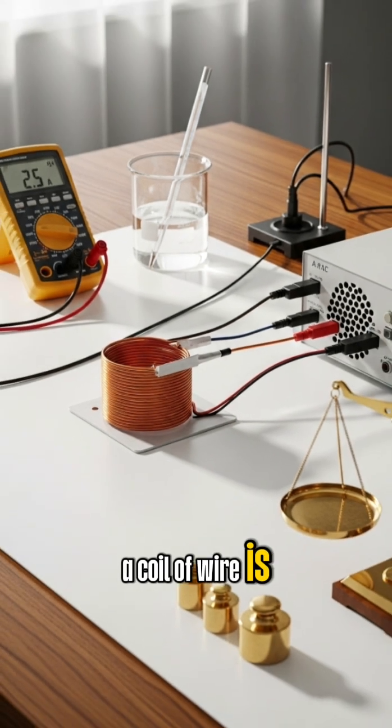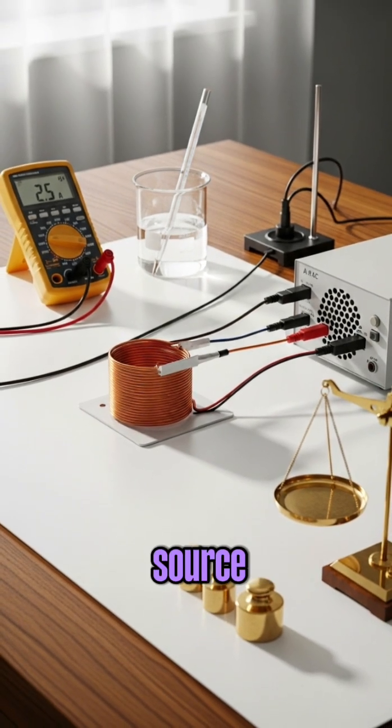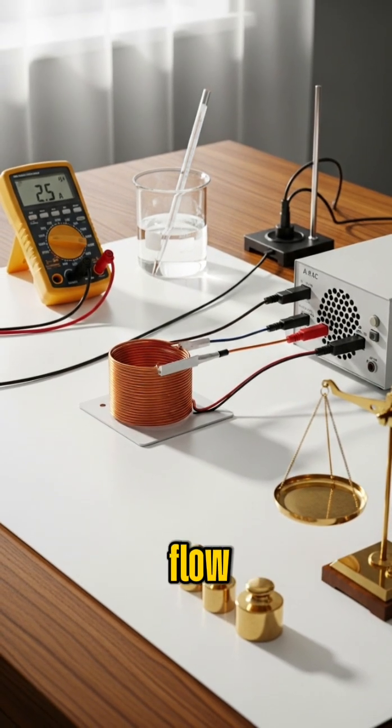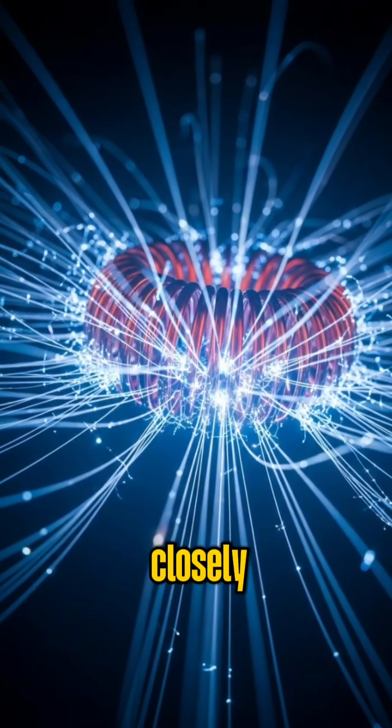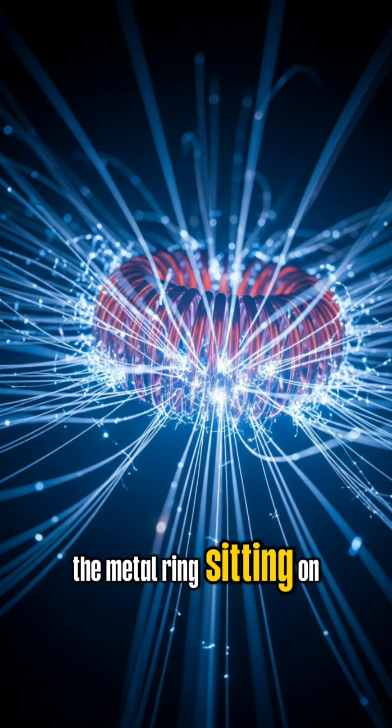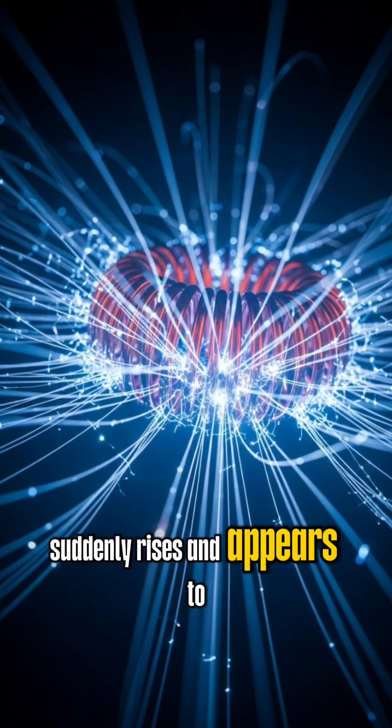A coil of wire is connected to an AC power source. When the current begins to flow, it creates a rapidly changing magnetic field around the coil. Now watch closely. The metal ring sitting on top suddenly rises and appears to float.